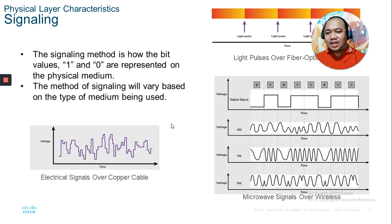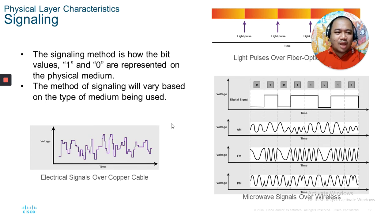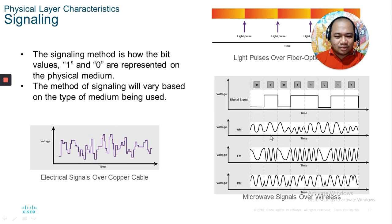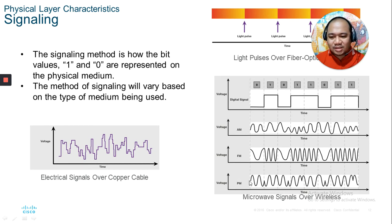Signaling is how bit values — ones and zeros — are represented on the physical medium, whether as electrical pulses, light pulses, or radio frequency. Examples show how electrical pulse voltage is recognized and converted into a series of ones and zeros. These examples include digital signals, amplitude modulation, frequency modulation, and phase modulation.